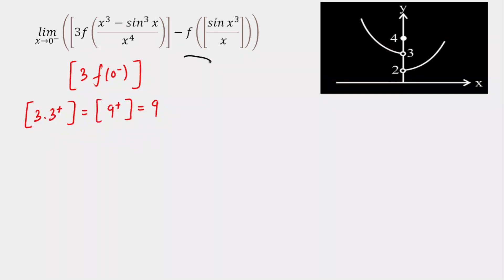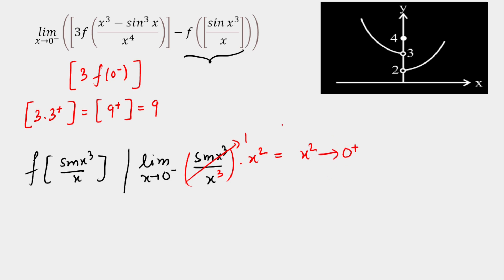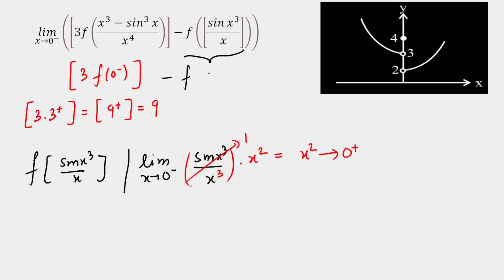Now let's calculate the second part: f(GIF(sin(x³)/x)). Taking the limit as x approaches 0 negative, we evaluate sin(x³)/x. Multiplying and dividing by x², this becomes sin(x³)/x³ × x², and the limit equals 1 × x², which approaches 0 positive. So we get f(GIF(0 positive)), and GIF(0⁺) = 0 exactly. So the second part becomes f(0).